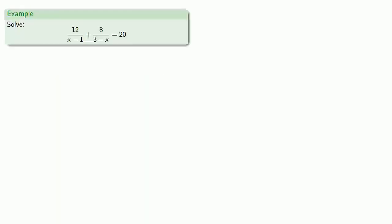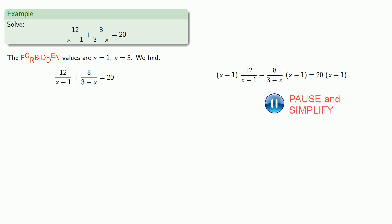So if we have something like this, we see that the forbidden values are x equals 1 and x equals 3. Our denominators are x minus 1 and 3 minus x. If we multiply through by x minus 1, we get... and we still have the denominator 3 minus x. So we'll multiply all of our terms by 3 minus x and simplify.